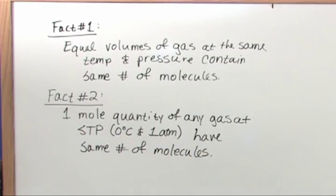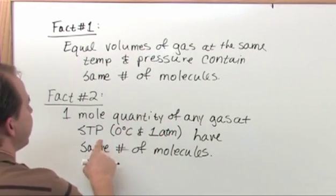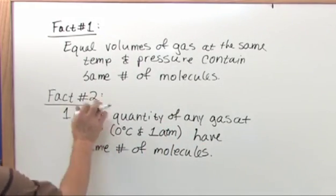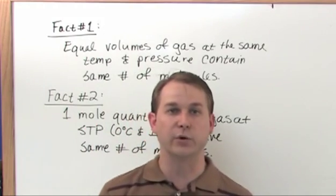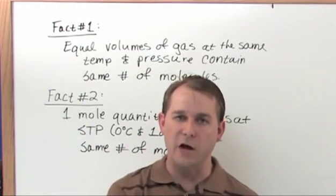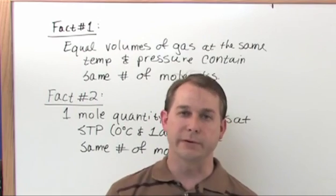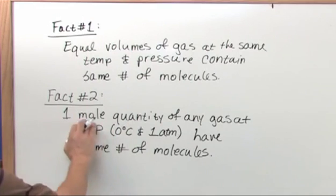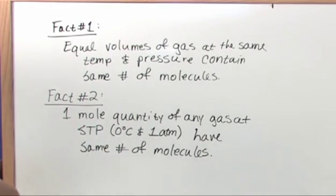So these are basically similar facts and these were experimentally measured a long time ago. Really what this is saying is that if you look at a mole, and we're going to talk about what a mole is in a second, you might remember a mole is a specific number of molecules. One mole quantity of any gas at standard temperature and pressure has the same number of molecules. What this fact number two is saying is that the mole, the quantity mole that you may have heard about from chemistry one, 6.02 times 10 to the 23rd, that's what one mole is.